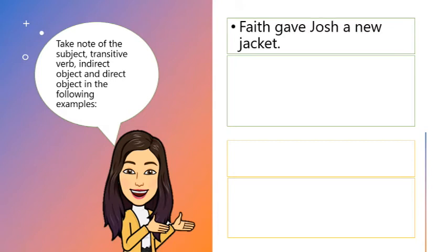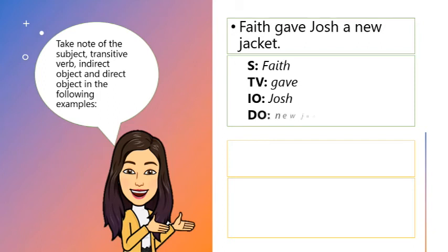Faith gave Josh a new jacket. Faith is the subject, gave is the transitive verb, Josh is the indirect object, and new jacket is the direct object.